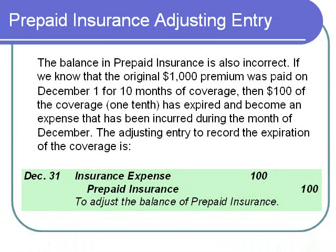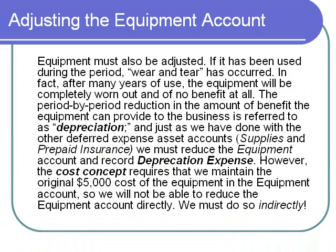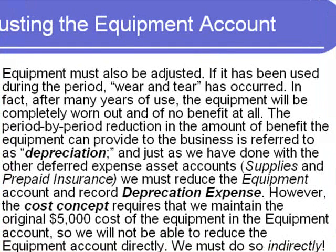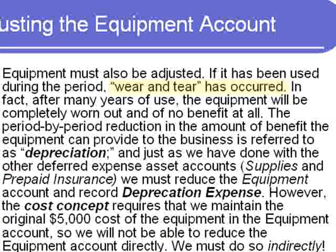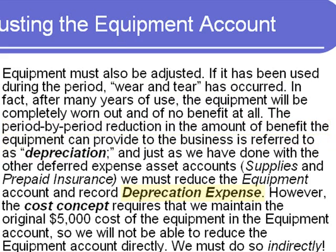Note that insurance expense was not originally on our trial balance — it will appear now if we redo the trial balance. The equipment account also represents a prepaid expense asset account and must also be adjusted. If the equipment has been used at all, wear and tear has occurred, and after many years of use, the equipment will be completely worn out. The period-by-period reduction in the benefit equipment can provide is referred to as depreciation, and we must reduce the equipment account and record depreciation expense.